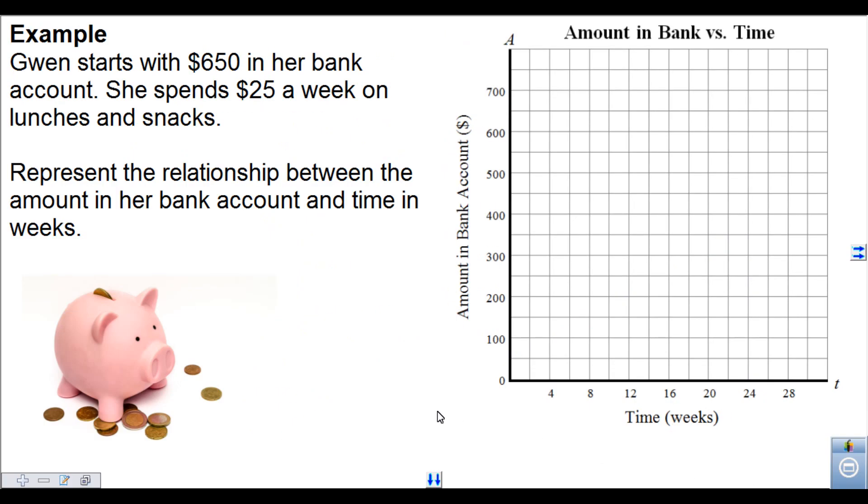So let's look at a different example here. Gwen starts with $650 in her bank account and she spends $25 a week on lunches and snacks. So we're going to represent the relationship between the amount in her bank account and time in weeks. Now again, Gwen begins with $650, so I can put a dot right here at $650 at zero weeks. And it's $25 a week that she's spending, so this graph is going to go down, because when you spend money your bank account level goes down.